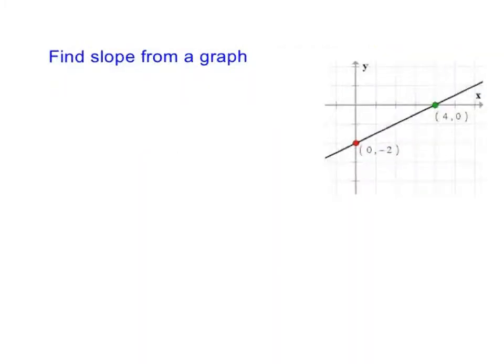So once again you can find slope from a graph and this is probably the simplest way. Slope oftentimes uses the letter m. Another way to say this instead of rate of change is rise over run. So the change in y over the change in x. And this is not a formula, this is just counting.